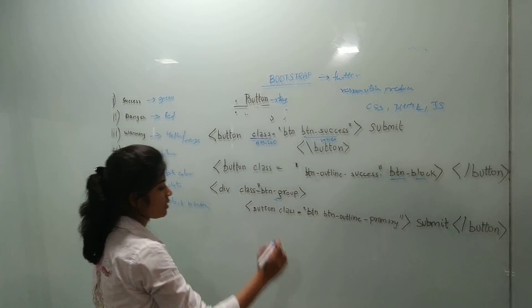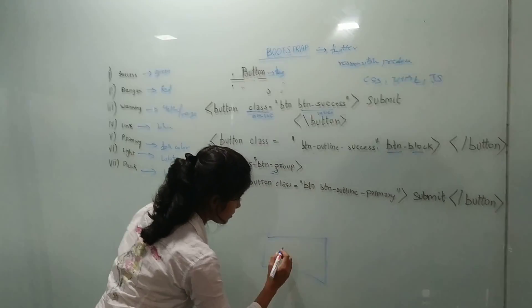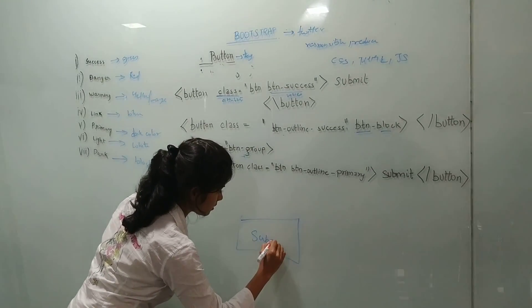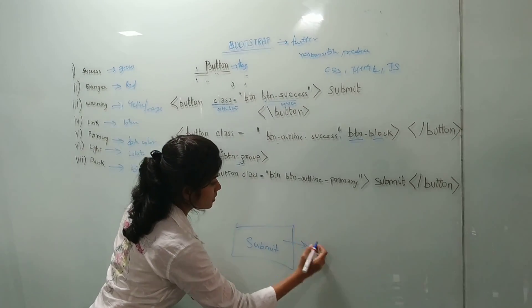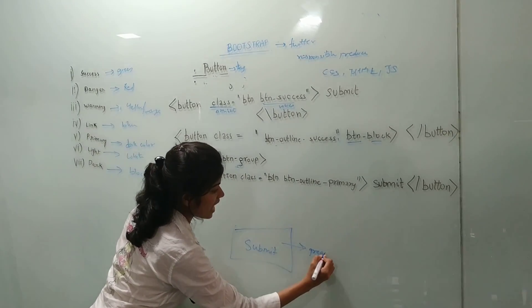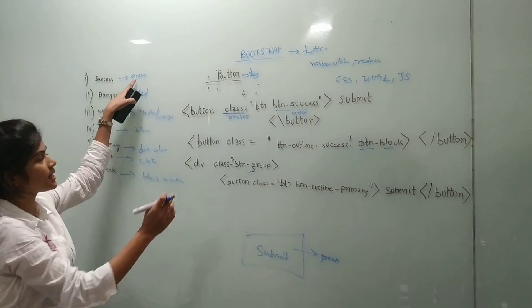For here we will get the button as submit because its value is submit and the color will be green, because we have used success, and for success it is green color.